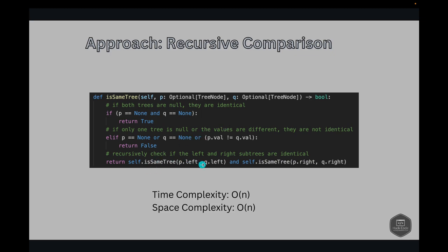The next step is to recursively check if the left and right subtrees are identical. We pass the left subtree of each tree and call the same method, and similarly for the right subtree. We do the logical AND of both results to check if both trees are identical or not.